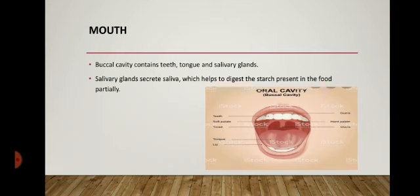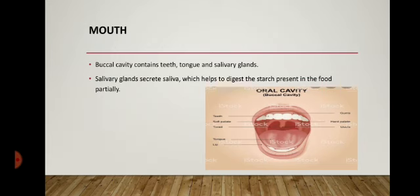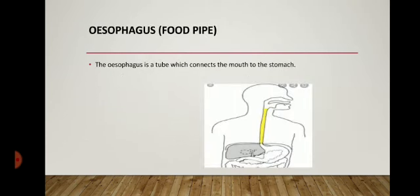Saliva is a type of digestive juice which helps to partially digest the starch present in food. For example, rice is rich in starch. When rice is ground by the teeth, the salivary gland secretes saliva, which mixes with the food particles and partially digests them. This slightly digested food is then swallowed by the tongue and goes down into the esophagus.